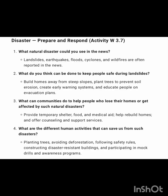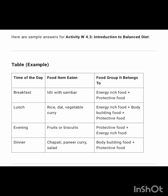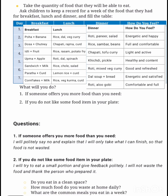Disaster preparedness and response — activity worksheet 3.7: natural disasters — four questions given and all four are answered. Next is day two: introduction to balanced diet — about breakfast, lunch, evening snack, and dinner. Food items which type will be eaten and food groups they belong to — energy-rich food, protective food, and different kinds of food belonging to different groups. Three questions related to balanced diet are given. Day one to day seven: breakfast, lunch, dinner — how do you feel when you eat these dishes.